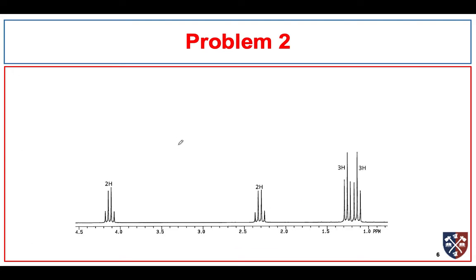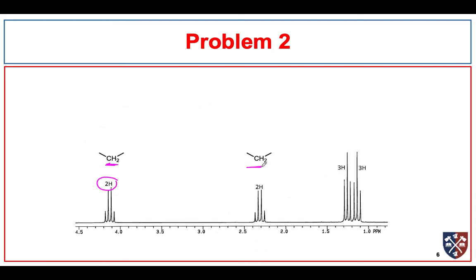Let's take a look at the NMR. We see the integrations. Let's keep things simple — if we see something integrate for two, the first thing we should think of is a CH2 group. We also have two signals that look like two triplets integrating for three each. Let's keep it simple and think of those as CH3 groups. And remember, we had an ester.